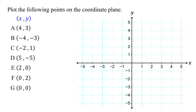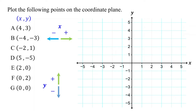For any point on a coordinate plane, the first number is the x-coordinate and the second number is the y-coordinate. To plot a point, start at the origin and move horizontally right or left to the x-coordinate. Then, from there, move vertically up or down to the y-coordinate. Finally, mark the point where you end up. The key concept to remember is that if the x-coordinate is positive, move right; if negative, move left. Similarly, if the y-coordinate is positive, move up; if negative, move down.